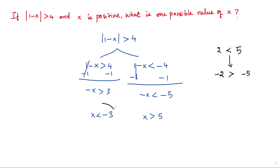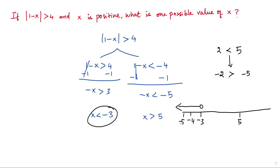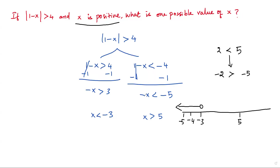So we have x less than negative 3 as one solution, and x greater than 5 as the other solution. Let's mark these two solutions on the number line. x cannot equal negative 3, so we take an empty circle, and since x has to be less than negative 3, we consider values on the left — negative 4, negative 5, and so on. According to the first solution, all values for x are negative, but the condition in the question is that x is positive.